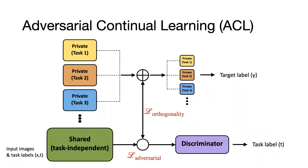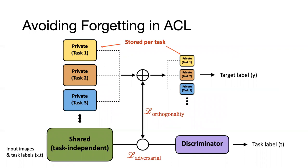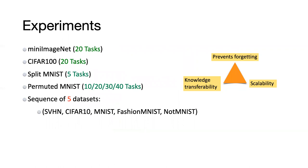To avoid forgetting, ACL predominantly relies on a scalable architecture growth strategy and, if need be, uses experience replay to preserve the shared knowledge. We have extensively verified our method on a variety of benchmarks and datasets and found it to be extremely good at preventing forgetting and transferability.